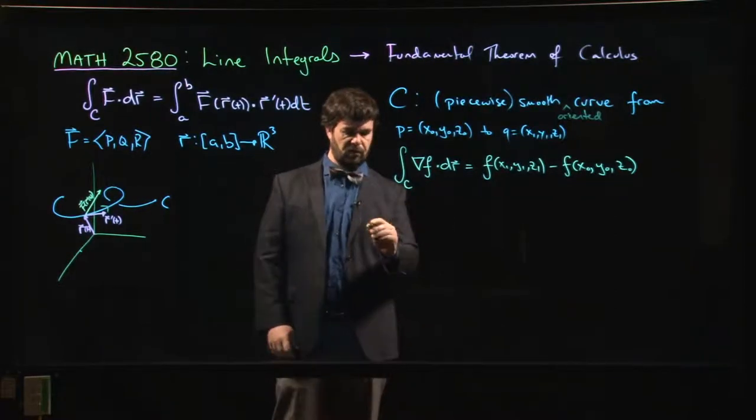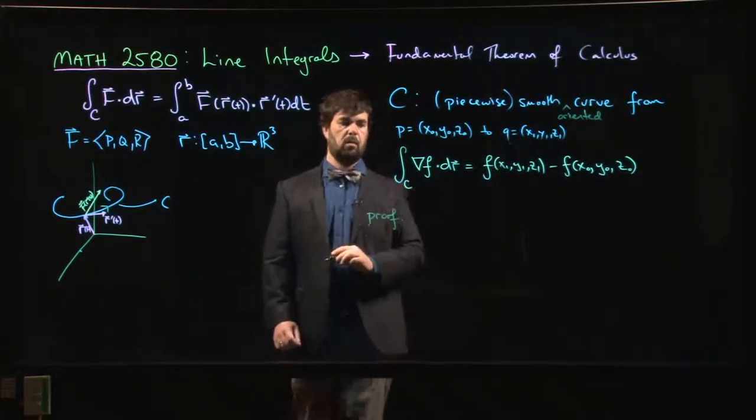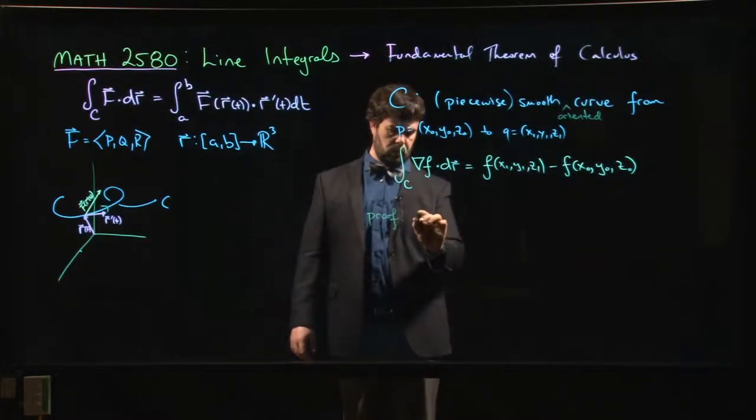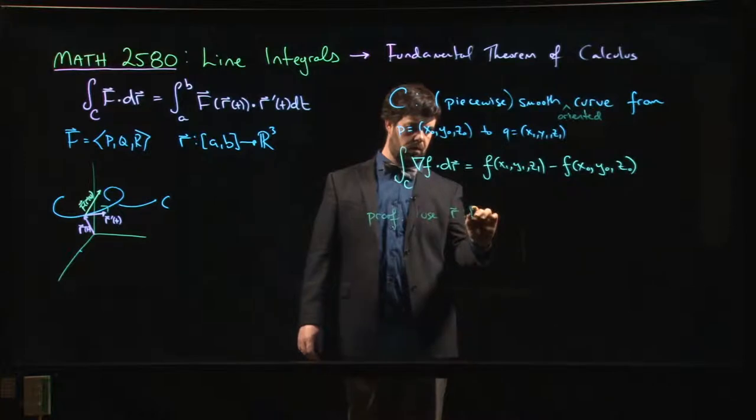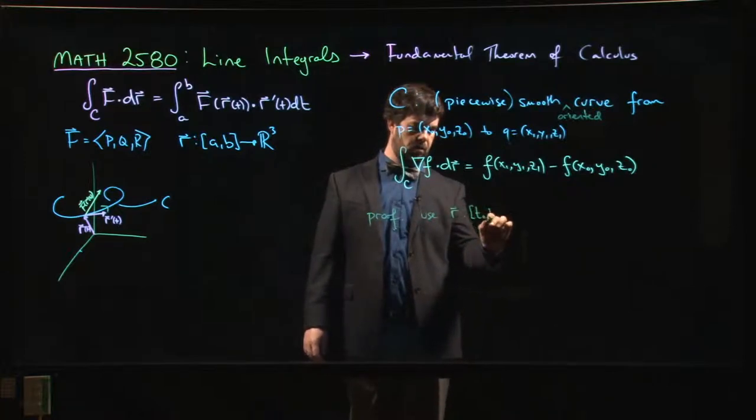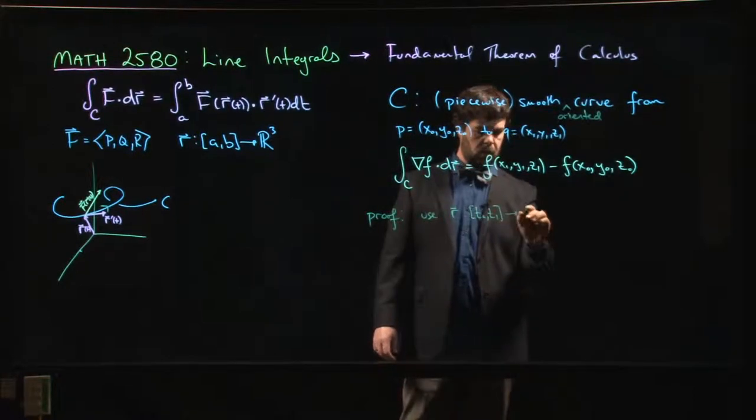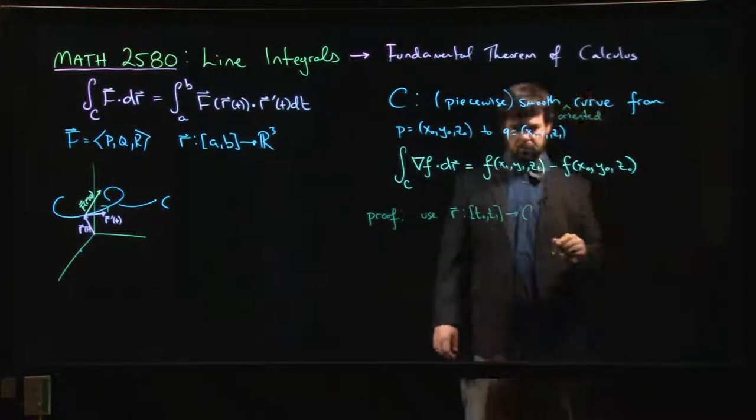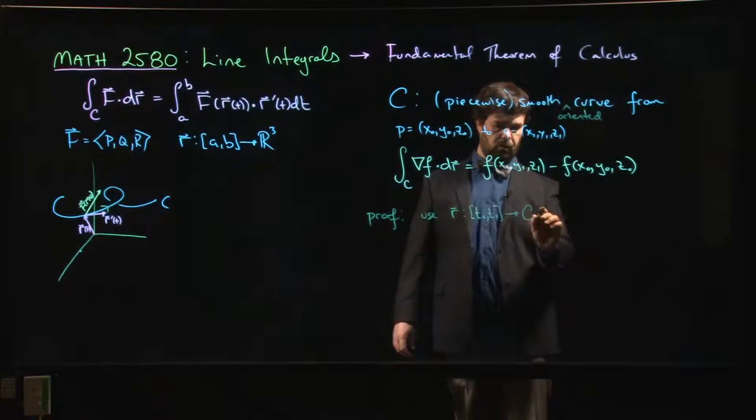So here's kind of a sketch of a proof. What we're going to do is consider a parameterization. We're going to use let's say r going from t0 to t1 going to, well, going to see - maybe I should say going to R^n. Let's say it goes to C.